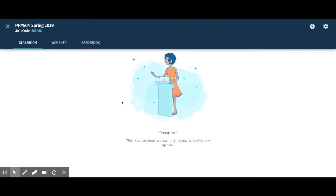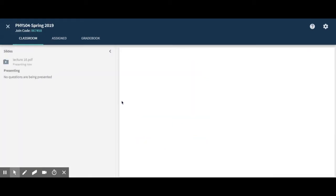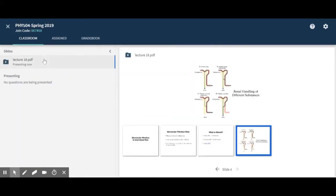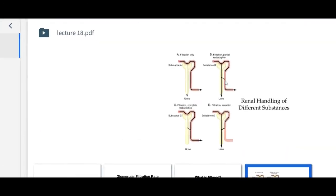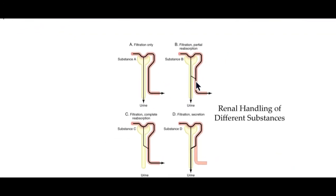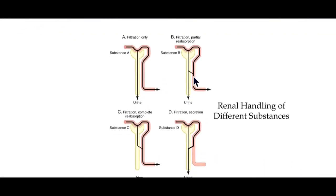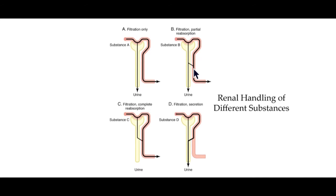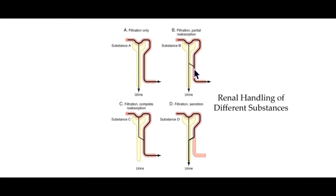So last time we left off with some fun TV time, but we're going to get back into what we were talking about with GFR. Does anybody remember what the barriers are for deciding whether or not a substance is going to be filtered? Size and charge.